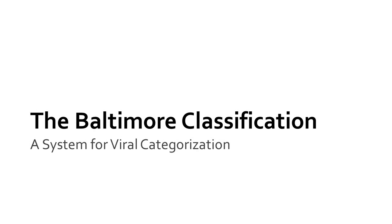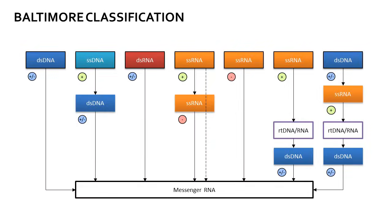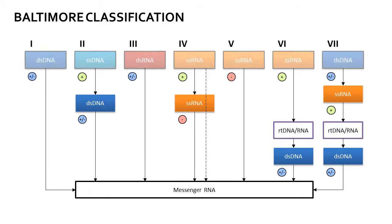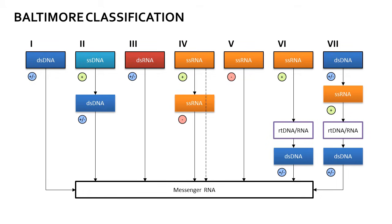Hello everyone and welcome to General Microbiology. Today we will talk about an easy way of remembering the Baltimore classification, one of the most commonly used systems for categorizing viruses. The system divides all viruses into seven categories based on how their genetic material is processed into messenger RNA, which is required to make proteins — a critical step in replication for all viruses.